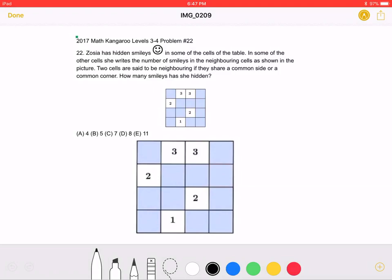Two cells are said to be neighboring if they share a common side or common corner. How many smileys has she hidden? A, 4, B, 5, C, 7, D, 8, or E, 11.